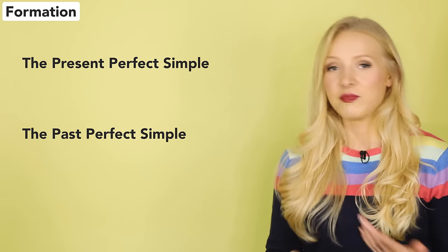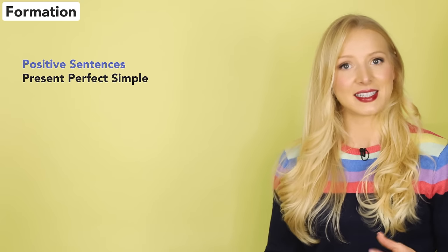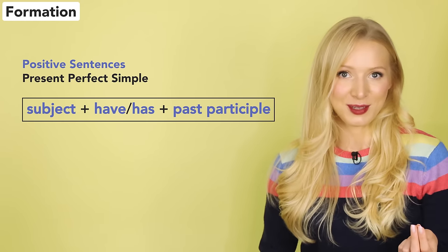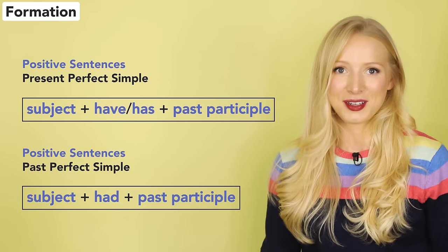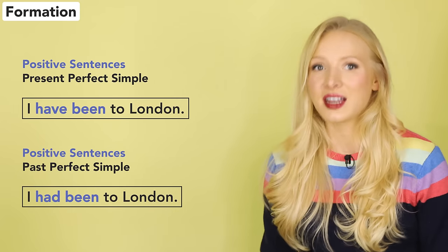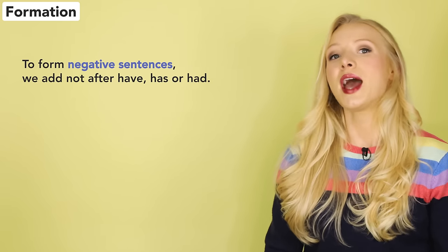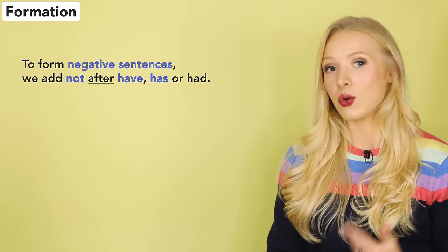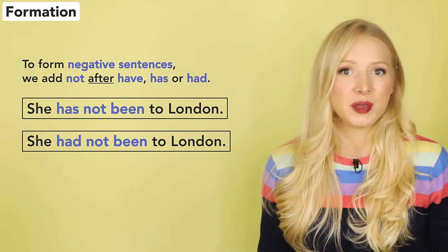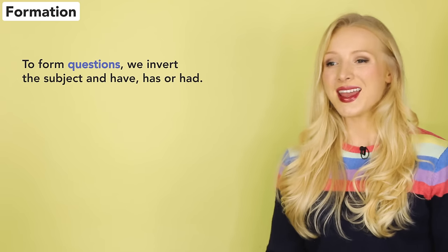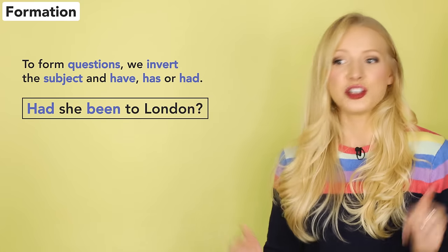Let's talk about how we form the perfect tenses. The present perfect simple and the past perfect simple have very similar forms. We form positive sentences in the present perfect simple with: subject + have or has + past participle. And we form the past perfect simple with: subject + had + past participle. For example: I have been to London. I had been to London. To form negative sentences, we add 'not' after have, has, or had — for example, she has not been to London; she had not been to London. And to form questions, we invert the subject and have, has, or had — had she been to London?